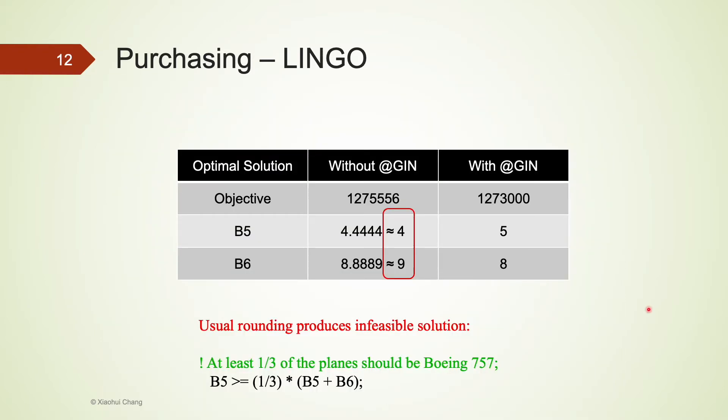Here is the comparison of the optimal solution when @GIN is used versus when it is not used. As you can see, declaring some decision variables as integers is critical for the success of decision making.